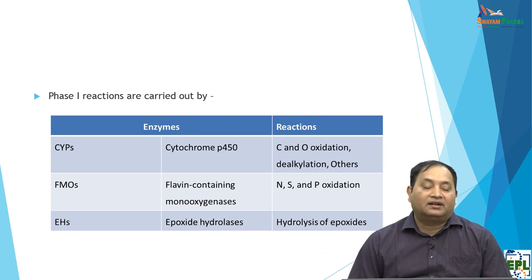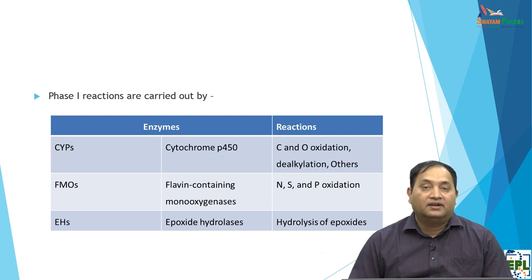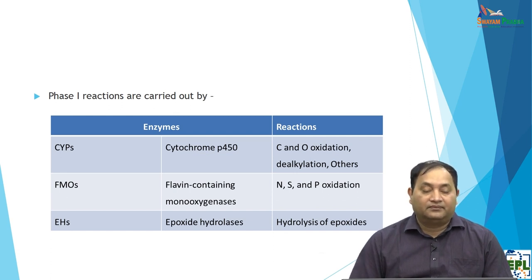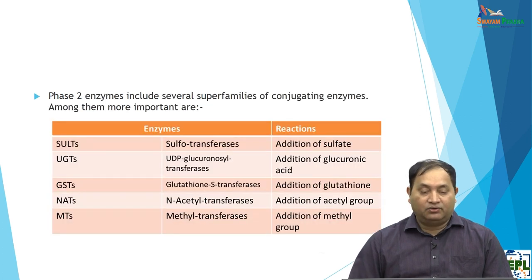The enzymatic reactions in Phase 1 include cytochrome P450, which is a heme protein estimated spectrophotometrically at a wavelength of 450 nm — that is why it is called cytochrome P450. Reactions through this enzyme include oxidation, dealkylation, and many others. Another enzyme is flavin-containing monooxygenase (FMO), which also helps in oxidation. Epoxide hydroxylase causes hydrolysis of epoxides. These are the enzymes of Phase 1 reactions.